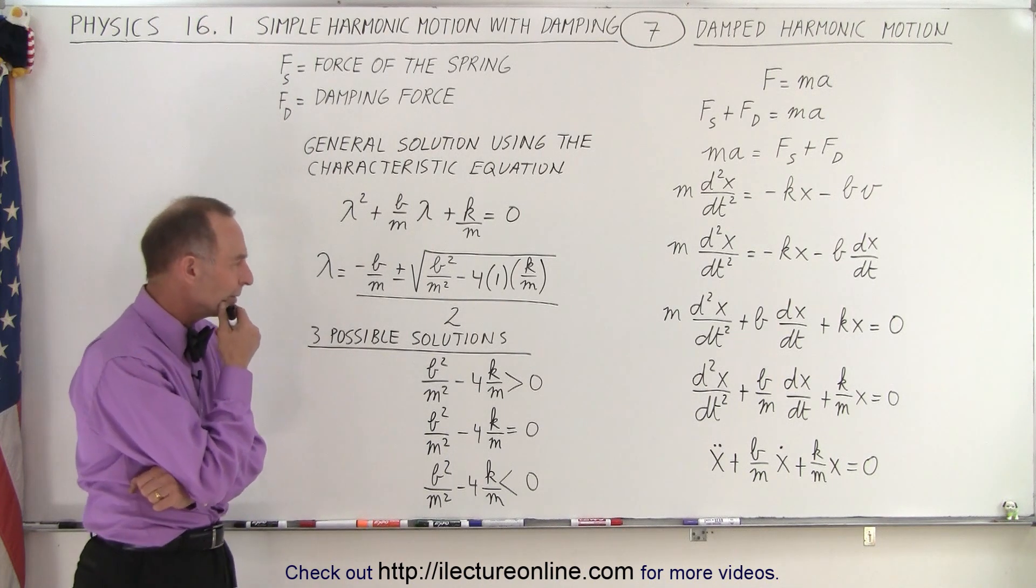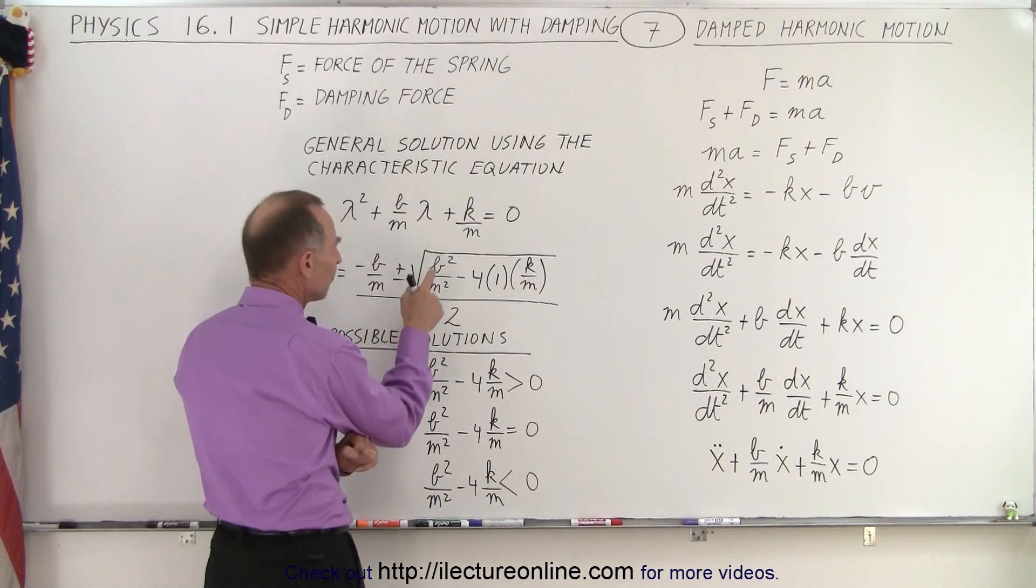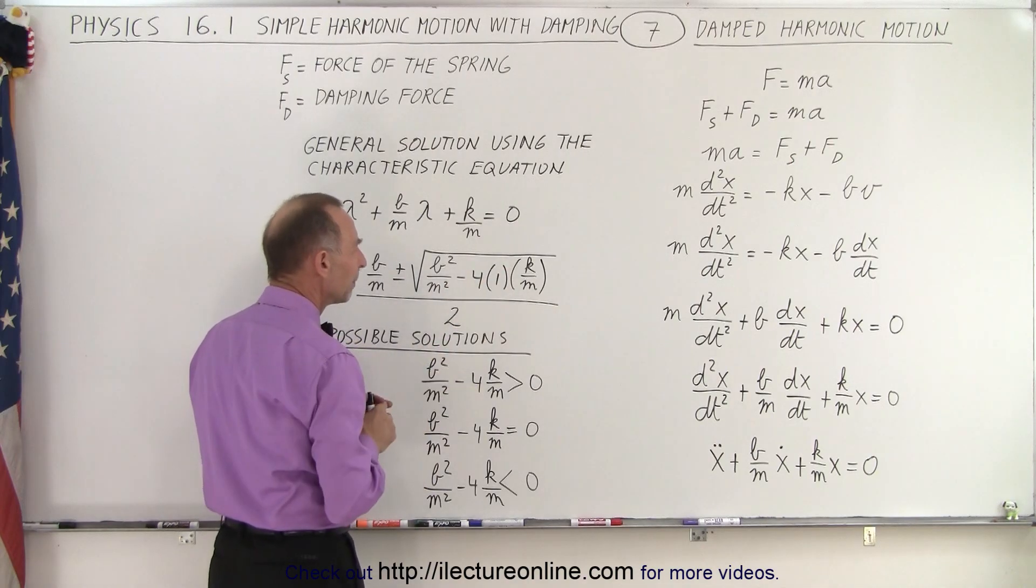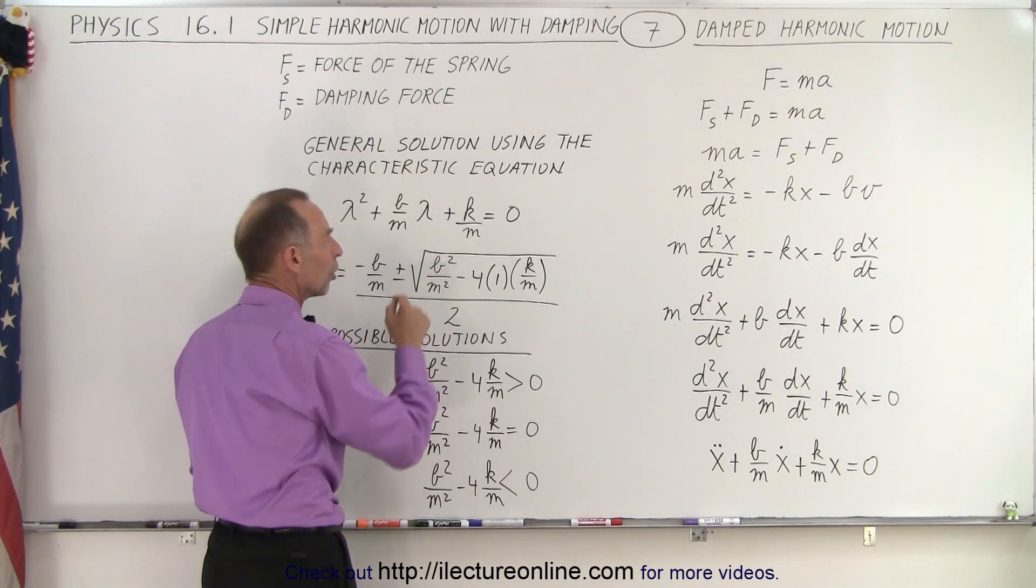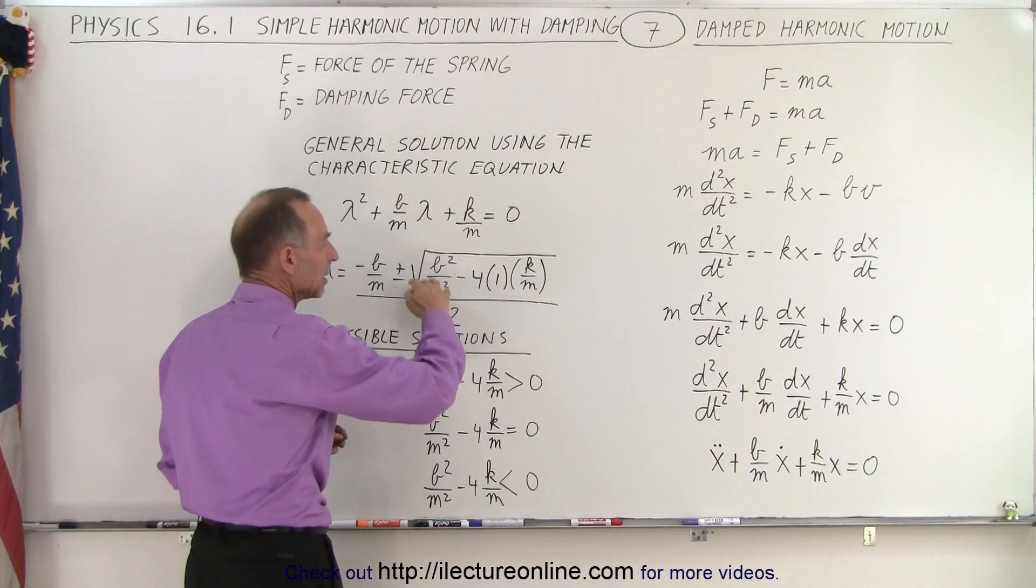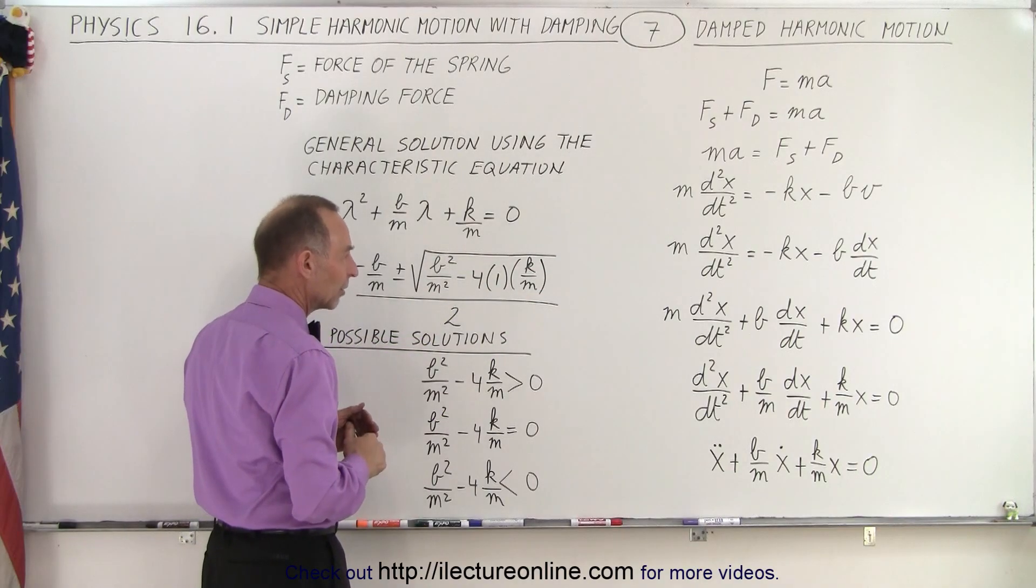So if we take a look at it, if B squared over M squared is greater than 4K over M, then this is positive. Now that can only happen if B is large. So we have a large damping effect, this will be greater than zero.